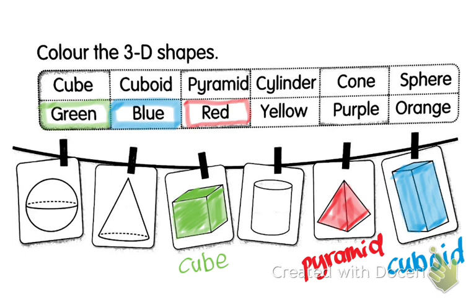Next one is cylinder. Cylinder, we have to color it in yellow. Which one is cylinder? Okay, this one. This one is cylinder.